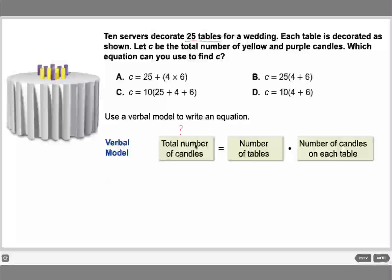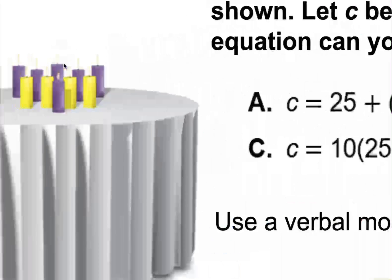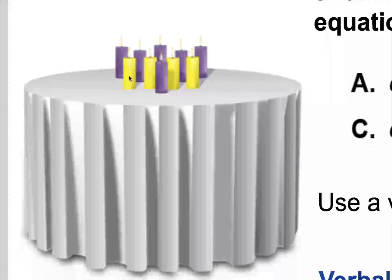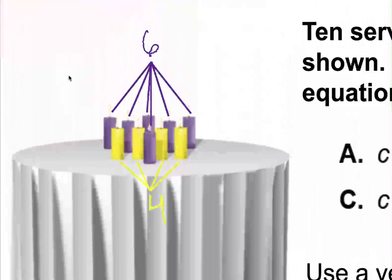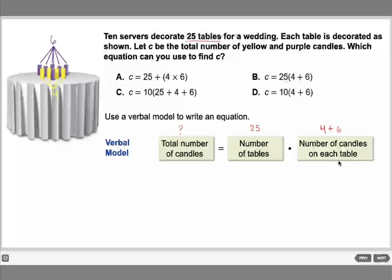The total number of candles is what we need to find — that's c. The number of tables is 25, given in the question. What is the number of candles on each table? Look at the table and count: four yellow and six purple, so ten candles total.